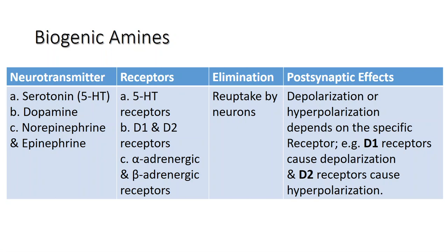Other biogenic amines are made from tyrosine and include dopamine, norepinephrine, and epinephrine. Dopamine is part of its own system — the dopaminergic system — which has dopamine receptors. Dopamine is removed from the synapse by transport proteins in the presynaptic cell membrane. Norepinephrine and epinephrine belong to the adrenergic neurotransmitter system. The two molecules are very similar and bind to the same receptors, which are referred to as alpha and beta receptors.